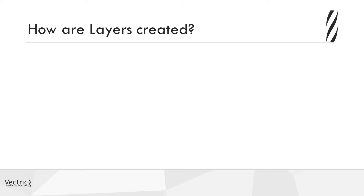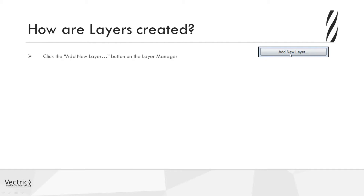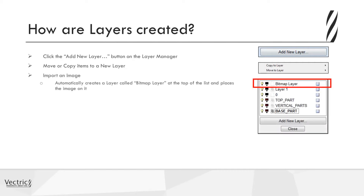How are layers created? By default when you start a job you'll automatically be working with layer one. To add a new layer, simply click the Add New Layer button in the layer manager. You can also right-click an item and use the option to move or copy items to a new layer. When you import a bitmap, the software will automatically create a layer called Bitmap Layer to house it.